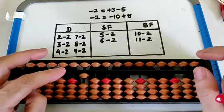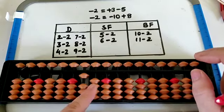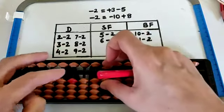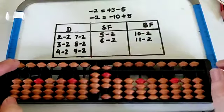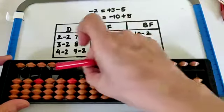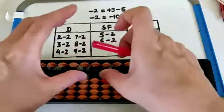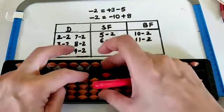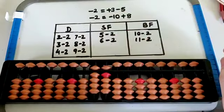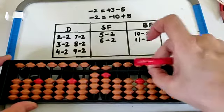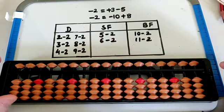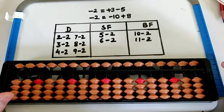Now let's check reverse jumping. 100 minus 2 — minus 2 ke liye hum minus 10 plus 8 karenge. Close the middle rod, that is 98. Set 101 minus 2 — again minus 100 plus 8, close the middle rod, that is 99.